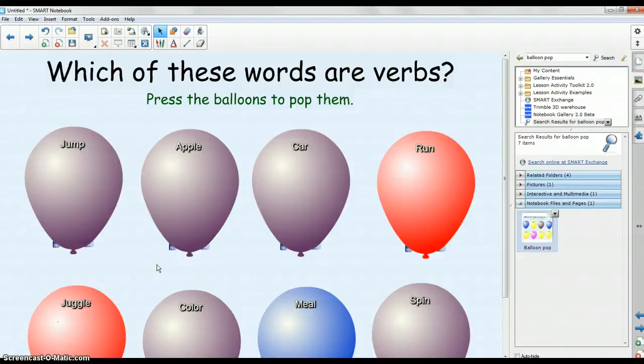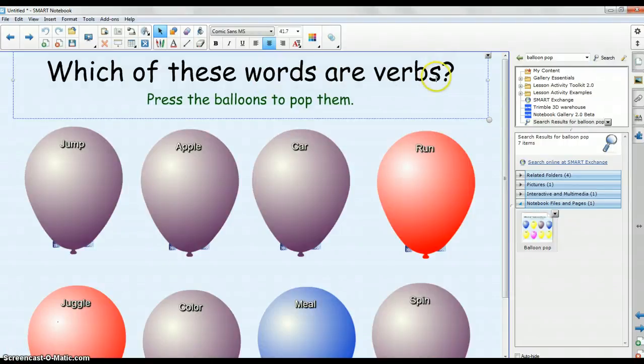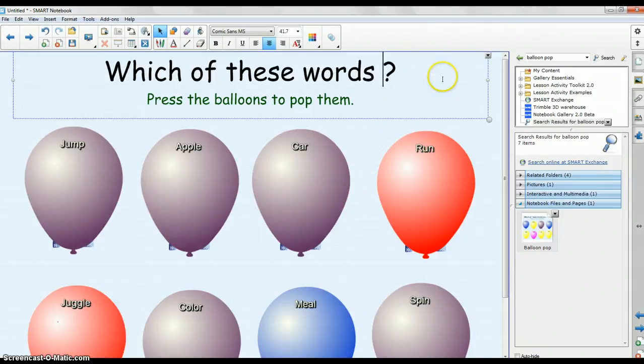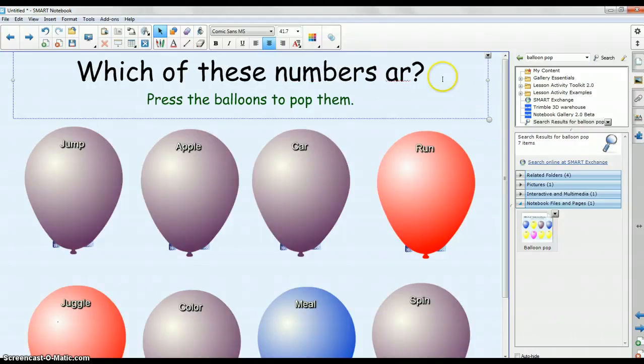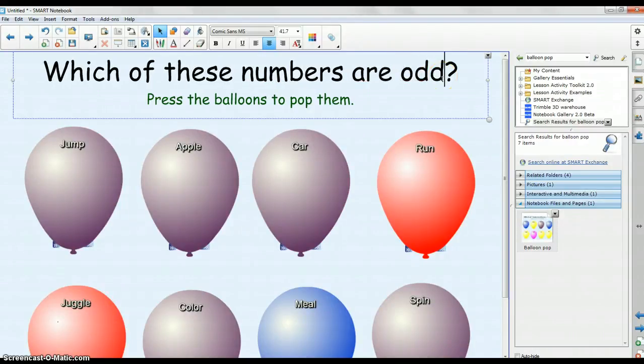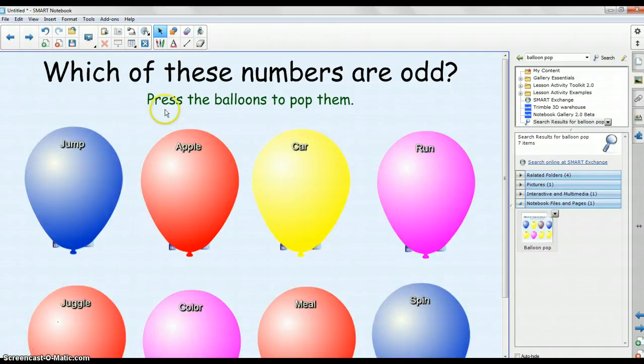So the first thing I'm going to do is edit the question here by double clicking and erasing, and I'm going to do which of these numbers are odd for when we are working with odd and even numbers. All right, so we can keep the press the balloons to pop them. That instruction can stay up there.